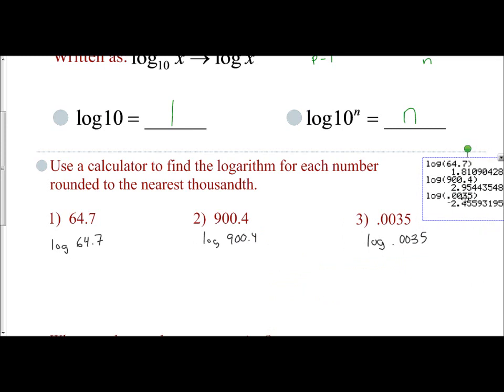If I want to round to the nearest thousandths, I need to look at the fourth decimal place to see if I round the third one up. I have 1.8109, which will be rounded to 1.811. I have 2.9544, which we left alone as 2.954. And I have negative 2.4559, which we rounded to negative 2.456. So we found the values if we take the log of those numbers.